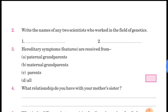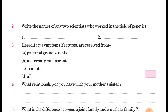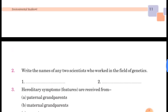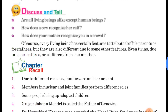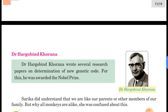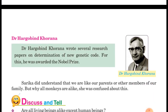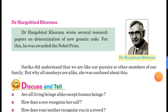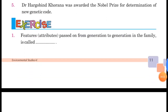Second question: Write the names of any two scientists who worked in the field of genetics. यहाँ पर कोई से भी दो वैज्ञानिकों का नाम लिखना है जिन्होंने genetics की field में work किया है। First is Gregor John Mendel, जिसे page number 10 पर बताया गया था, और another one is Dr. Hargobind Khurana।